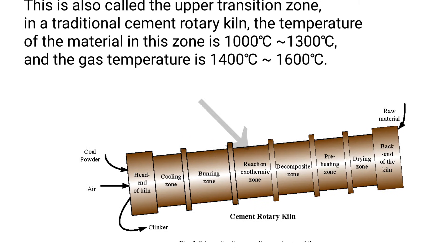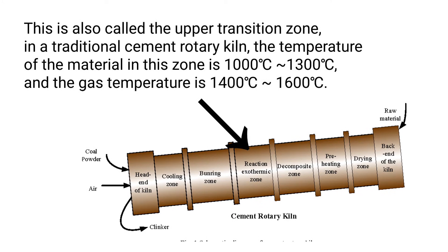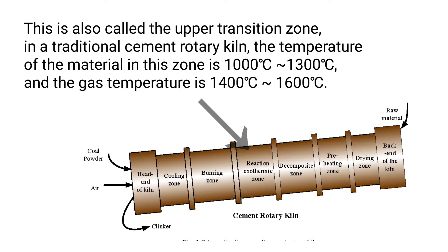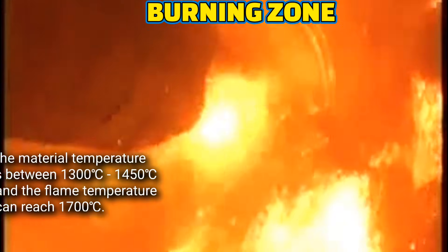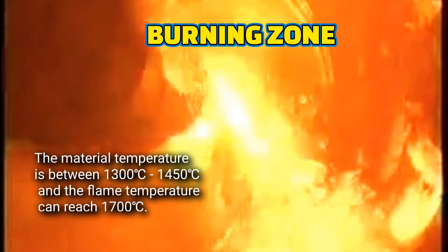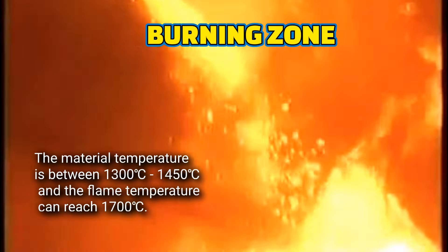The exothermic reaction zone, also called the upper transition zone: in a traditional cement rotary kiln, the temperature of the material in this zone is 1000 to 1300 degrees Celsius, and the gas temperature is 1400 to 1600 degrees Celsius.